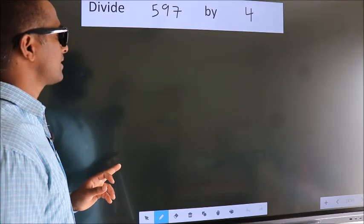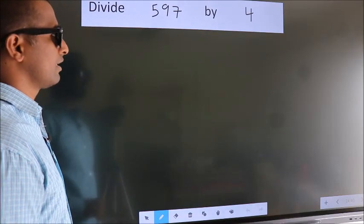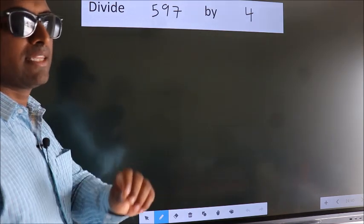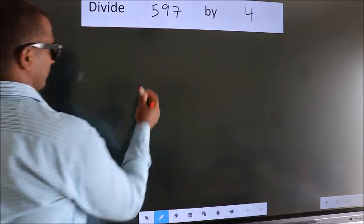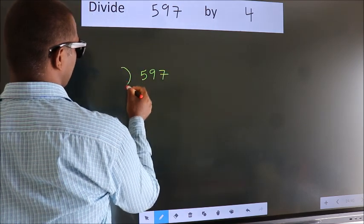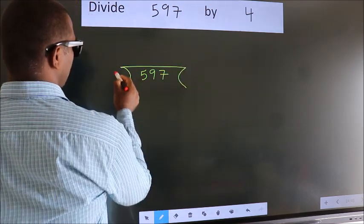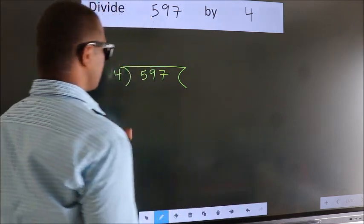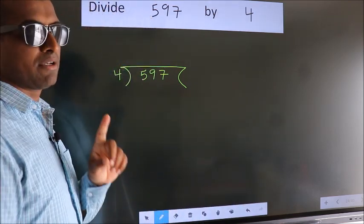Divide 597 by 4. To do this division, we should frame it in this way. 597 here, 4 here. This is your step 1.